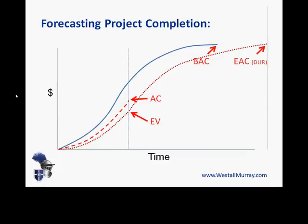Likewise, if we look at actual costs and project forward that trajectory, we would expect that our estimate at completion for dollars — the cost of our project — is going to be higher than our original budget. So what we're going to do now is calculate exactly what those values are for estimate at completion, making use of actual cost, earned value, planned value, and also the schedule performance index and cost performance index as calculated in part 2.